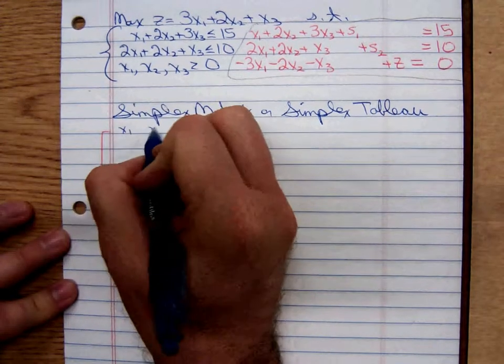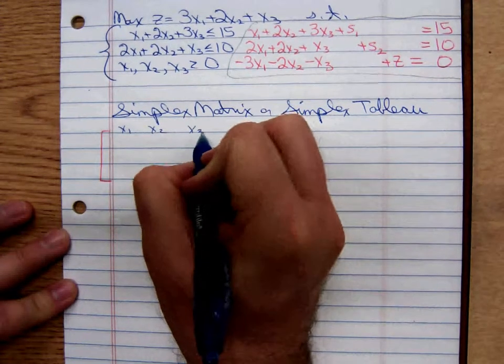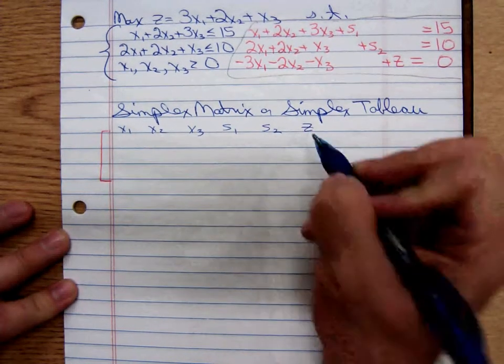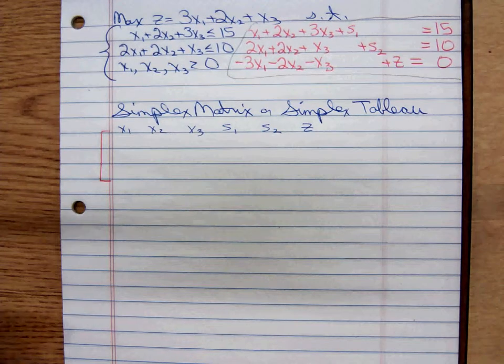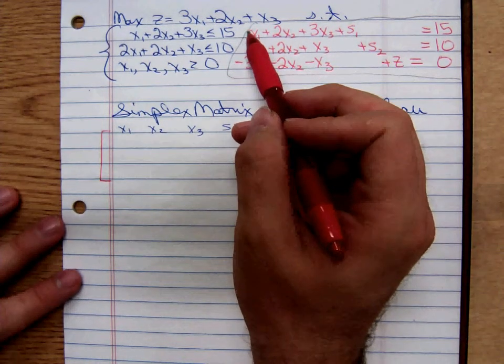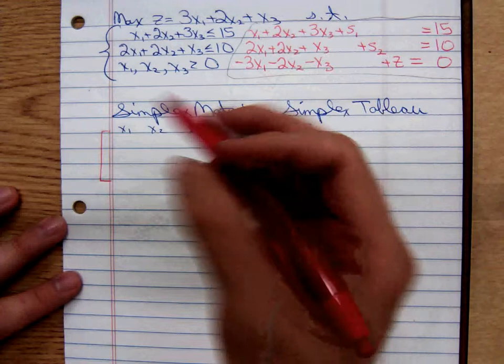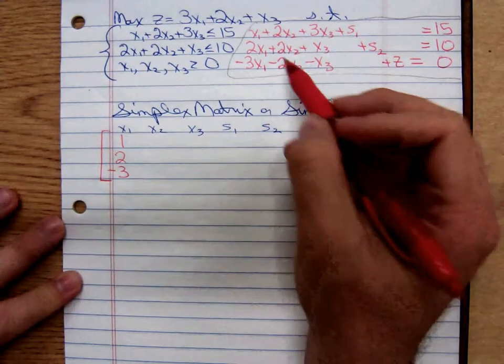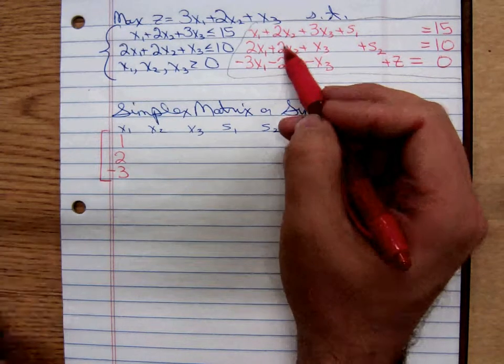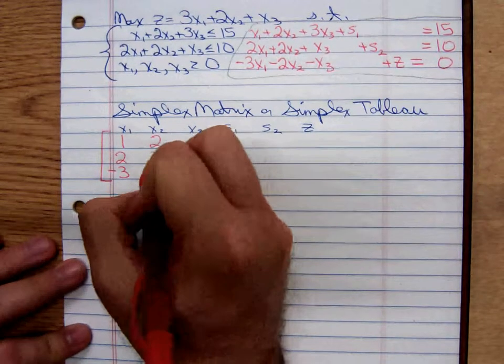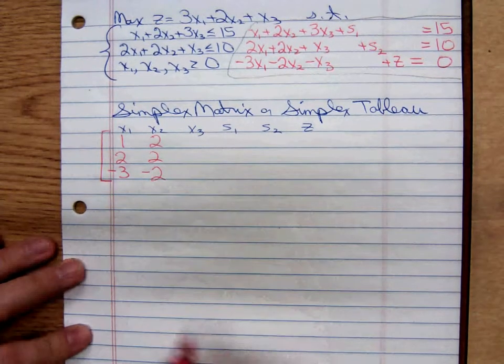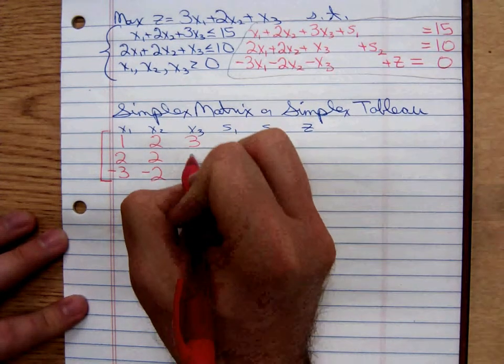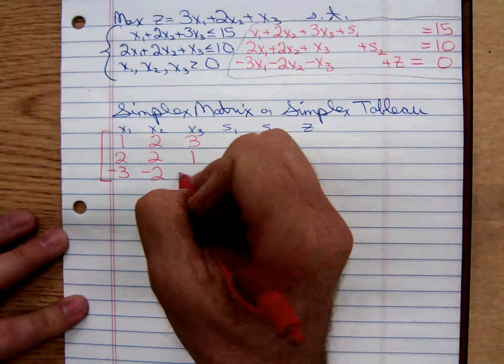We're going to have to have a column for every one of these variables. So, x1, x2, x3, then slack 1, slack 2, and z. The coefficients for x1: 1, 2, negative 3. For x2, we have a 2, 2, and a negative 2. For x3, we have a 3, 1, and a negative 1.